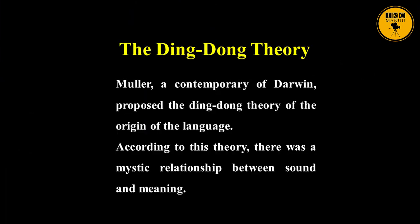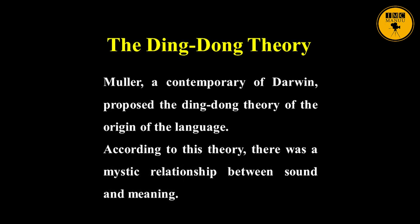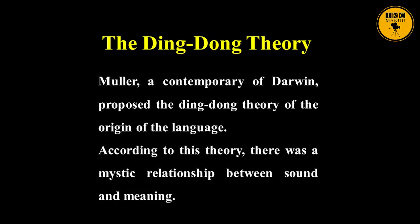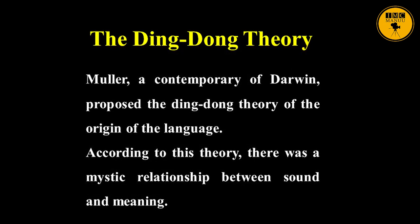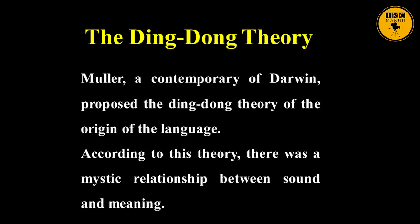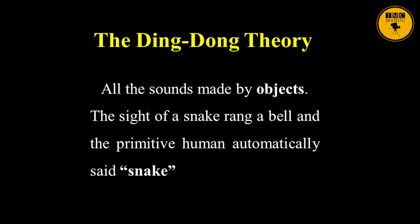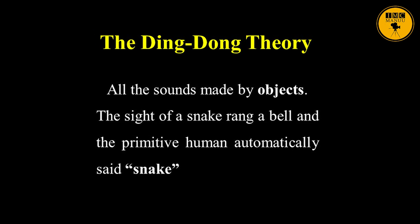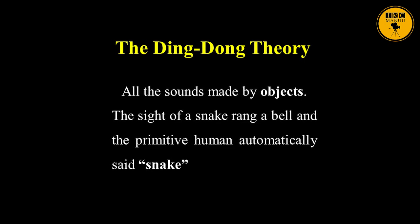Another important theory about the origin of language is the Ding-dong Theory. Muller, a contemporary of Darwin, proposed the Ding-dong Theory. According to this theory, there was a mystic relationship between sound and meaning — for example, all the sounds made by objects. The sight of a snake rang a bell, and the primitive human automatically said 'snake!'